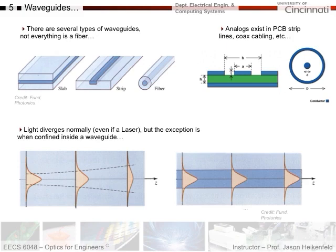A key thing to remember: light diverges normally—you always had some divergence even with the laser in the lab. But the only exception is when it's confined inside a waveguide. Light propagating in free space will diverge even if it's inside material such as glass. An optical waveguide is the only case where light will not diverge.